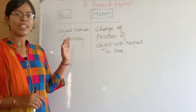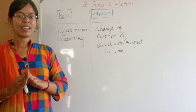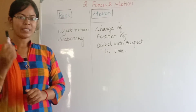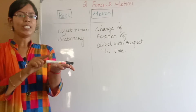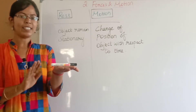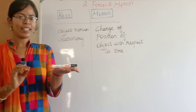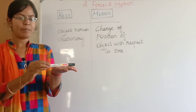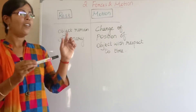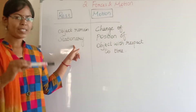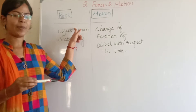Now let's see the difference between rest and motion clearly. Let me tell an example first. I am keeping this pen in my hand. Now this pen remains still as it is — I am not disturbing it. So I can say that this object, that means this pen, remains stationary. Whenever an object remains stationary, we can say that this object is in rest.